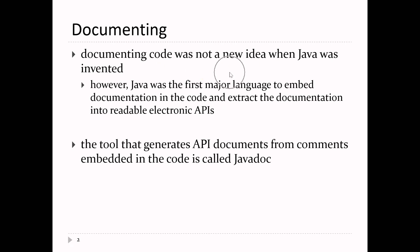That documentation can be extracted from the code to produce readable electronic documents. Java was born around the start of the internet, and the creators realized they could put documentation online. They created a tool and a convention for documenting Java code that produces these documents automatically. The tool that reads the comments in your code and extracts documentation is called javadoc.